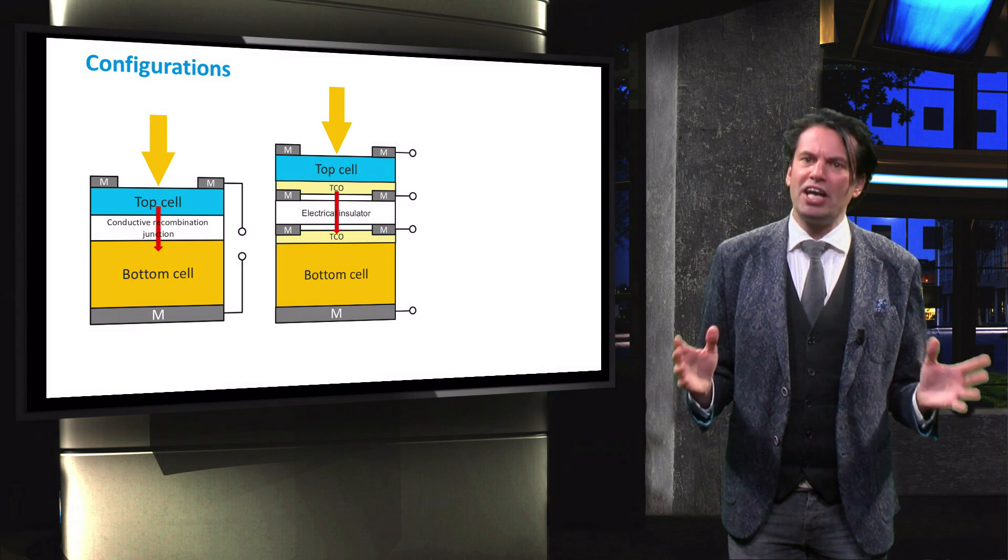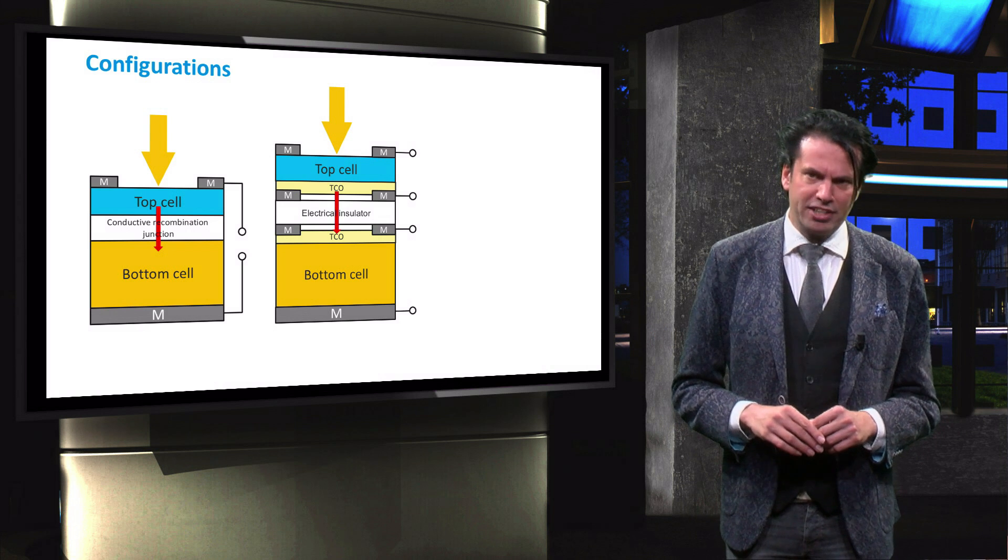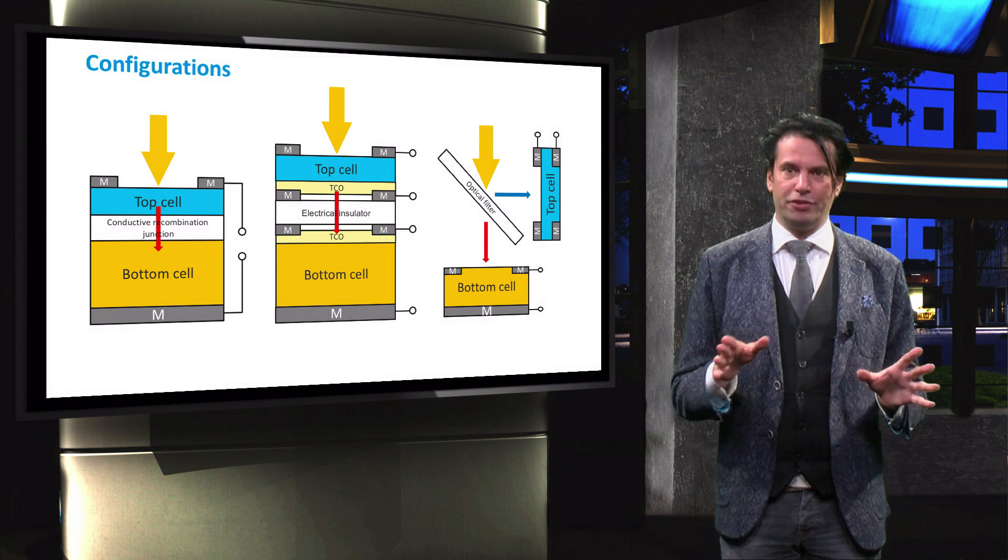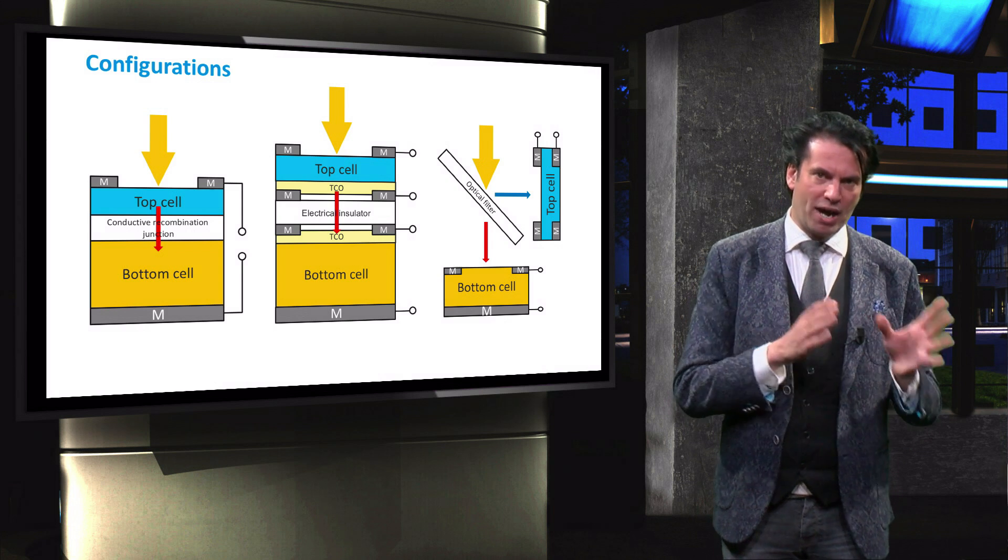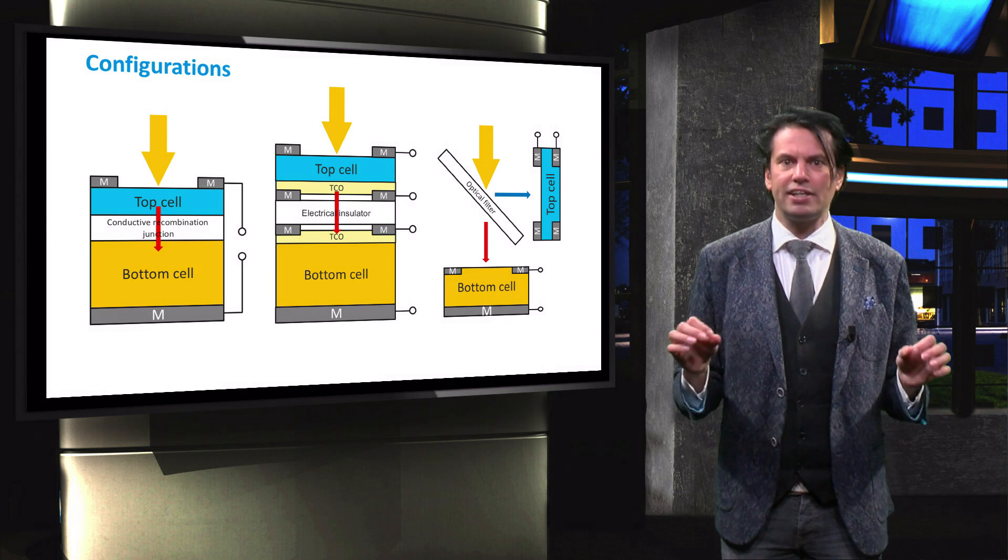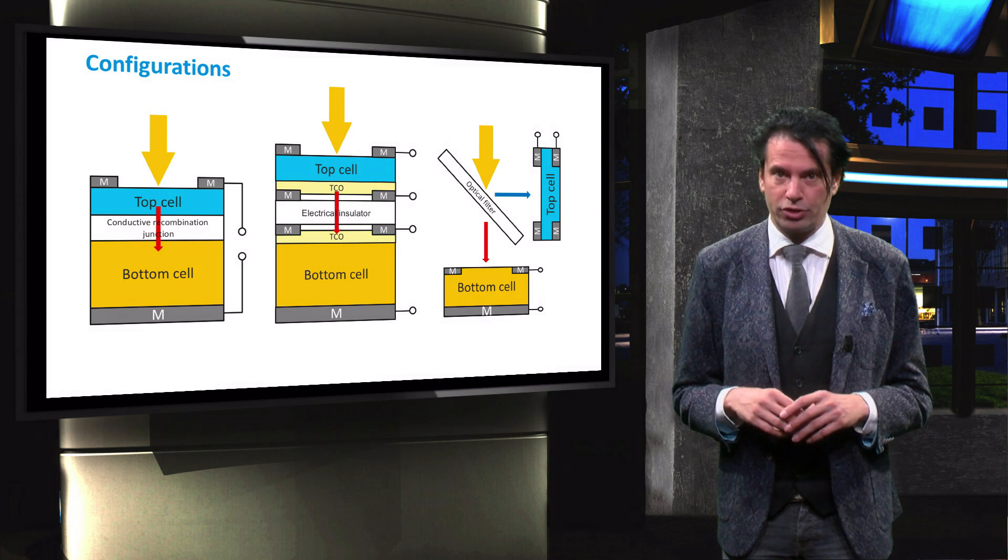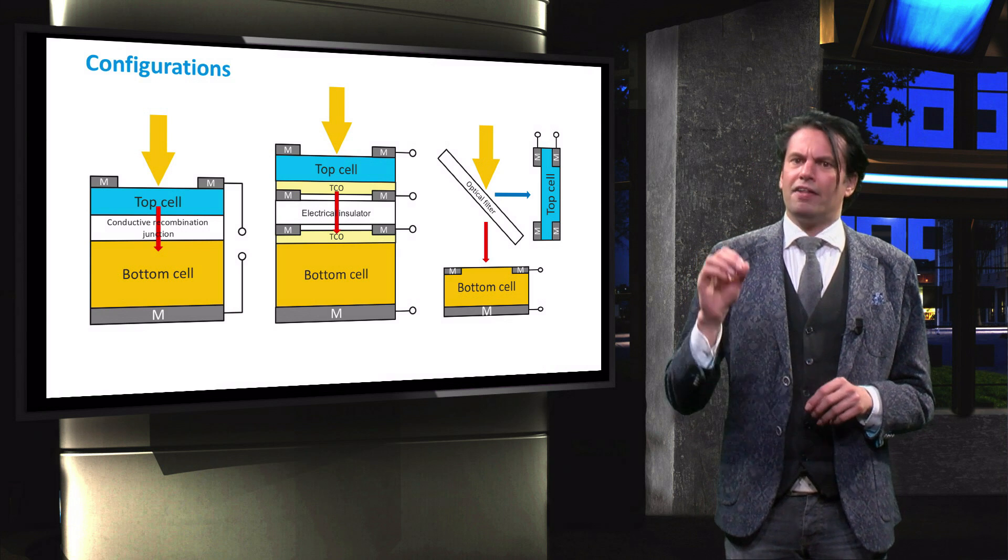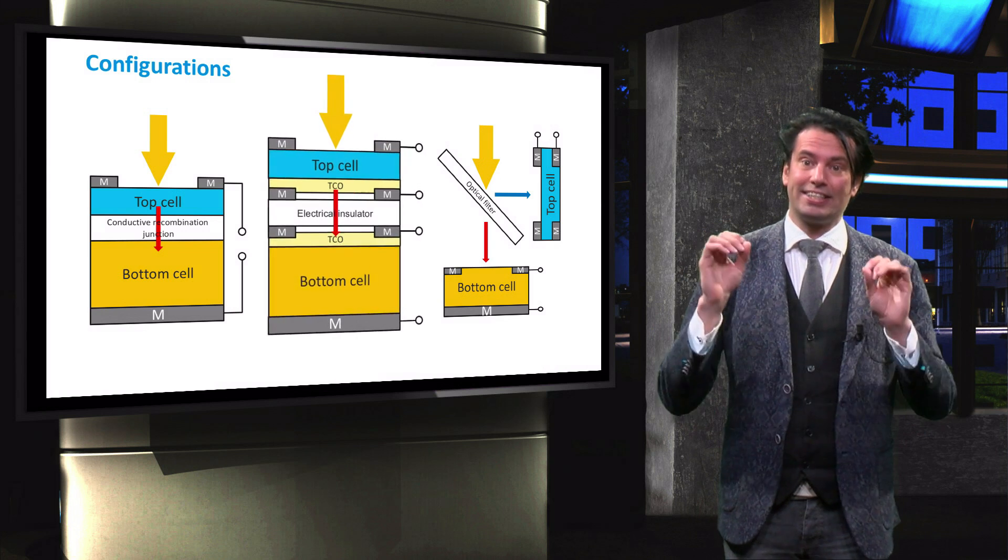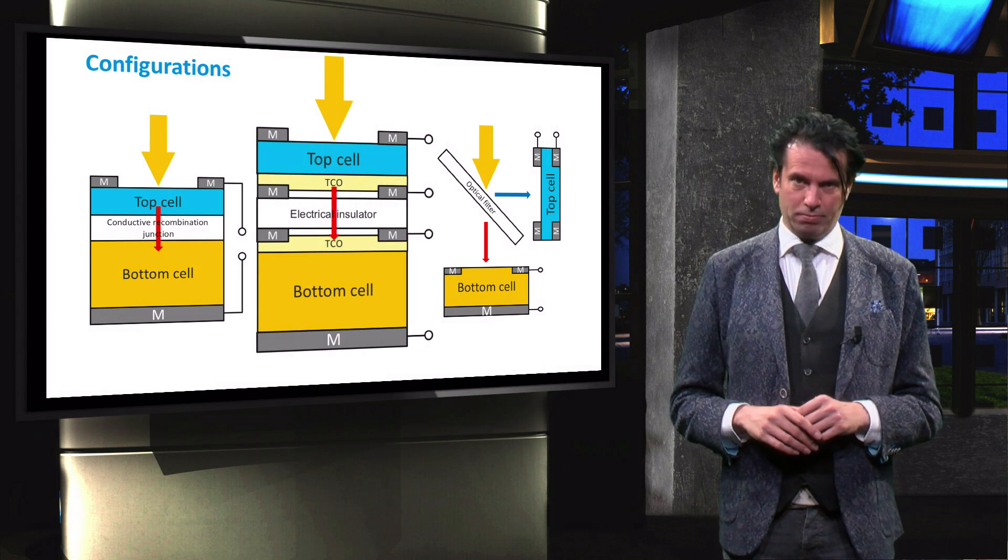Another way of realizing a four terminal device is by using an optical filter. This filter redirects part of the spectrum to one cell and the other part to another cell. This technique is not the four terminal technology of interest. Therefore, in this video we will focus on the mechanically stacked four terminal tandem devices.